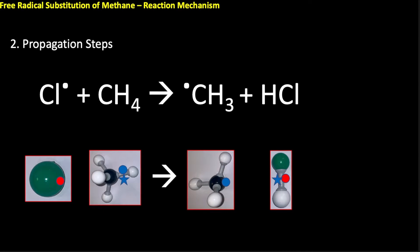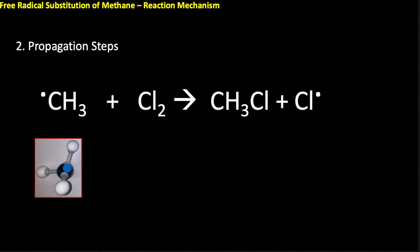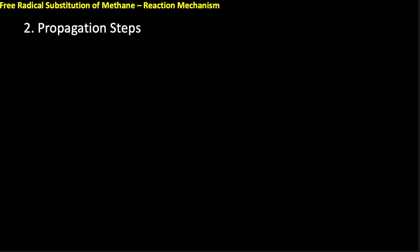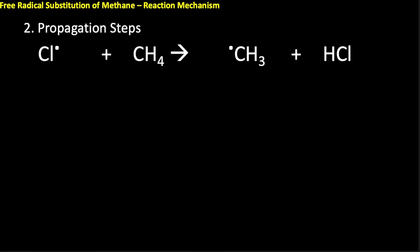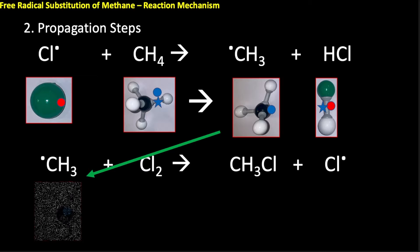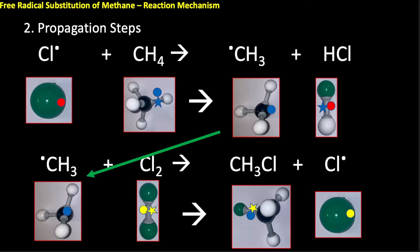We now have a second propagation step, where the methyl free radical generated in step one meets another chlorine molecule to give chloromethane and another chlorine free radical. So in step one, the chlorine free radical from initiation meets methane to produce the methyl free radical and HCl, and that methyl free radical then reacts with another chlorine molecule to give chloromethane and a chlorine free radical.